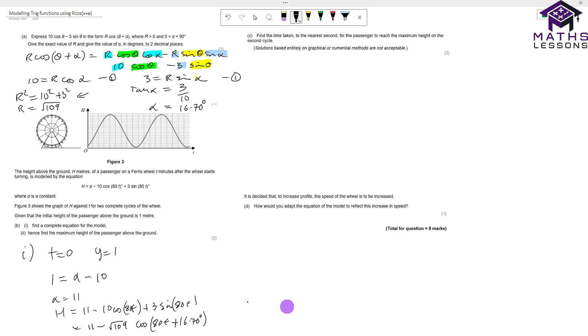For part two, hence find the maximum height of the passenger above the ground. Well, it's going to be when cos is equal to minus one in this case, because we'll be taking that away. So it's going to be equal to 11 plus the square root of 109, which when you work that out comes out to be 21.44 meters.